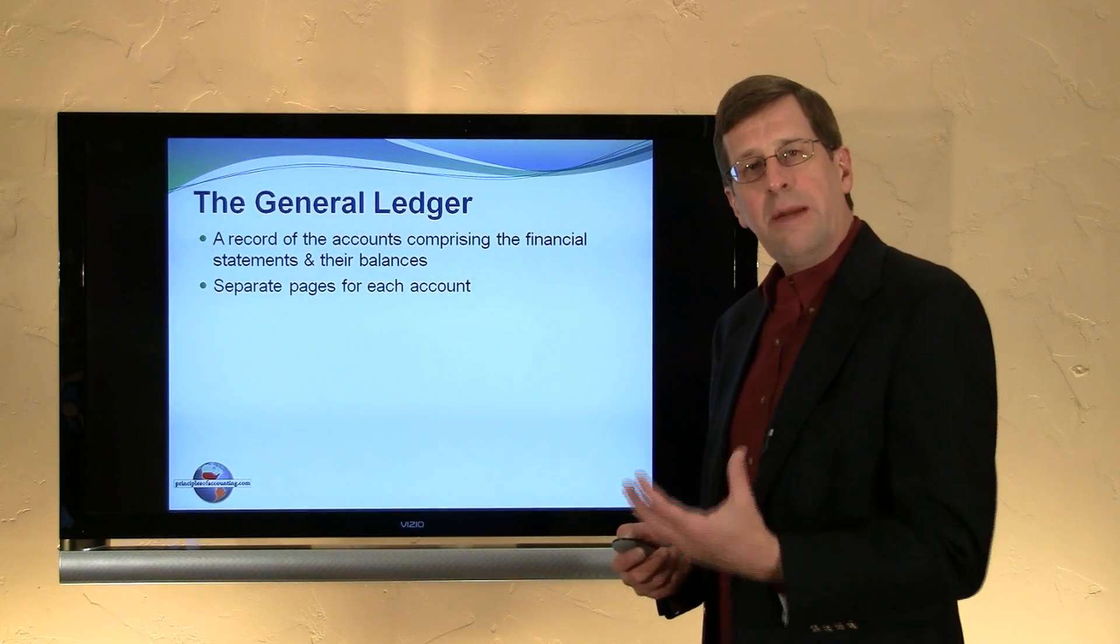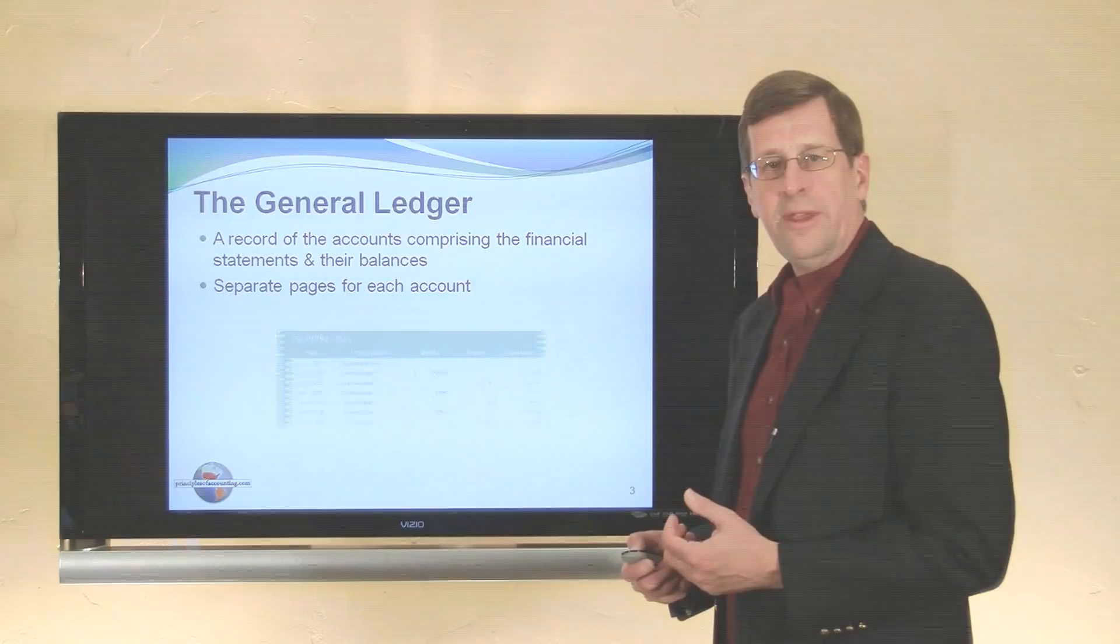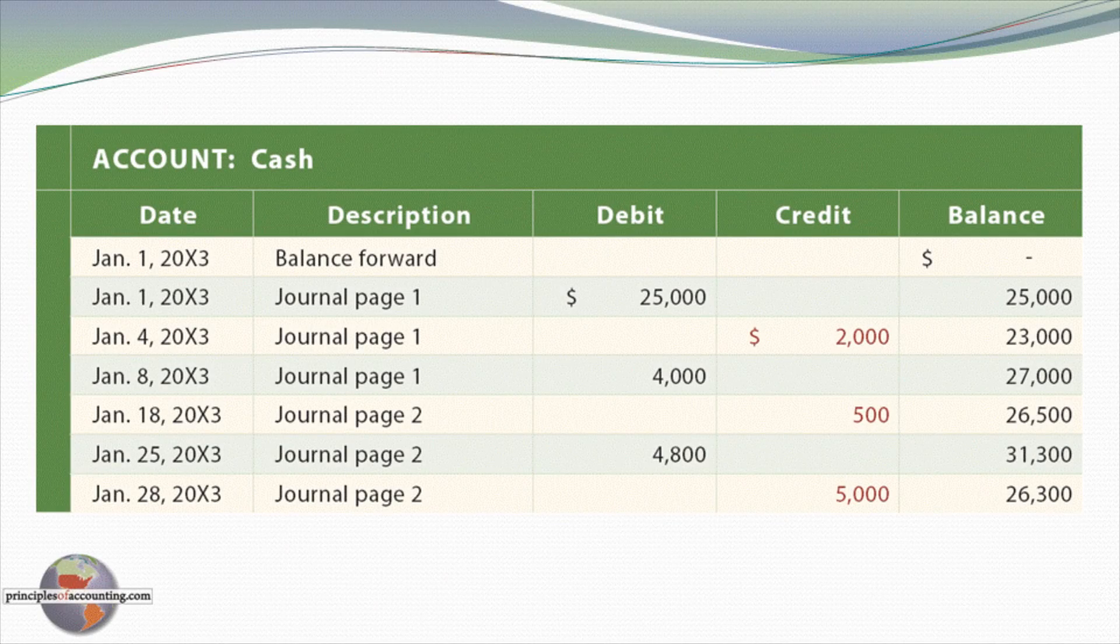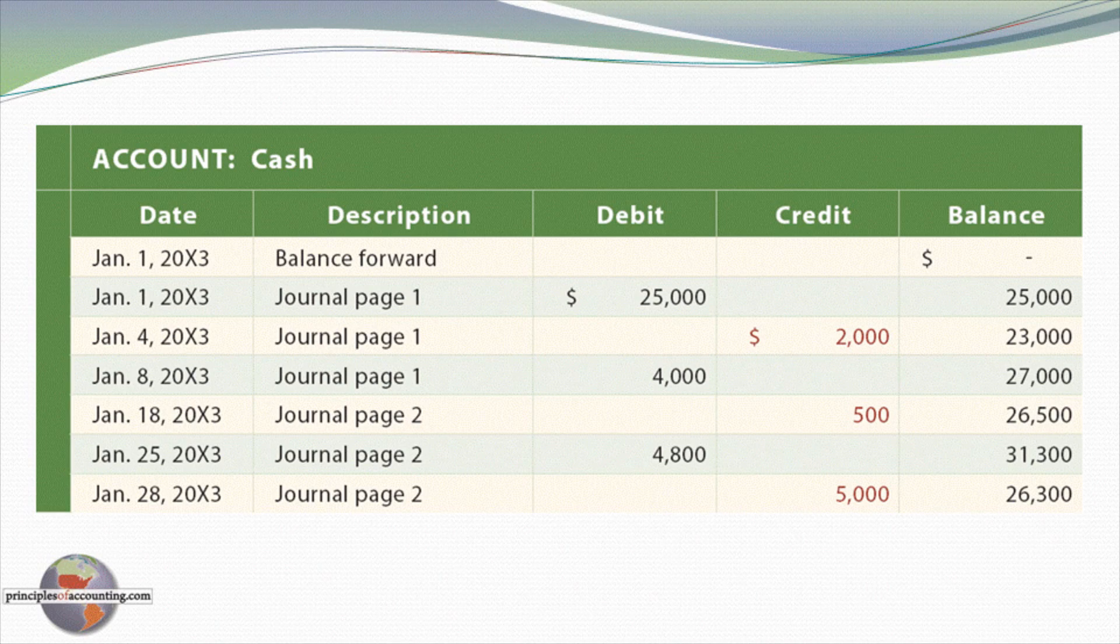Even in an electronic system, you might periodically print out a general ledger so that you can see each account. Let's look again at what an account would look like in the general ledger. Here I'm showing the cash account for this particular business. They started the year with no cash. I believe in this example it was actually a new business. The first transaction caused an increase of $25,000 to cash, or a debit, giving rise to a $25,000 balance on that date. And so it went for the subsequent transactions.